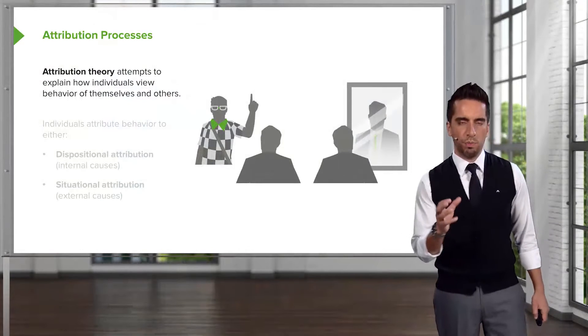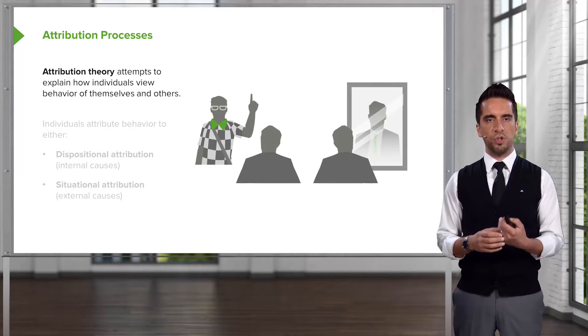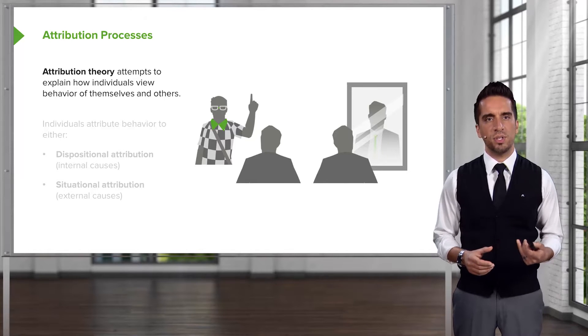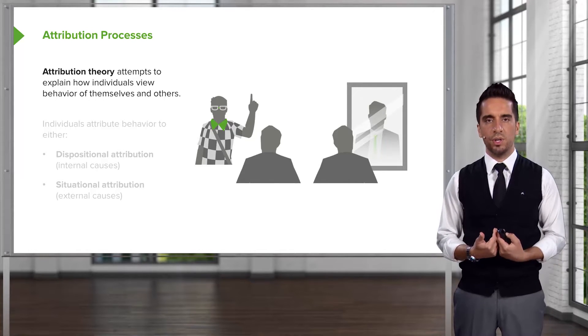Let's talk about attributing behavior to persons or situations. When you are around other individuals, you tend to act a certain way, and certain situations will change the way in which you act. There's a process called attribution theory, and what it does is attempt to explain how individuals view behavior of themselves and others.